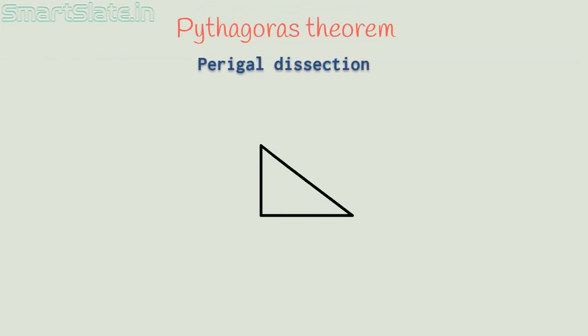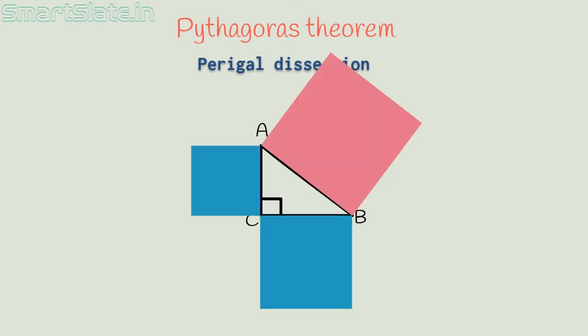Construct a triangle ABC right-angled at C. Draw squares on AB, BC, and CA. Make a copy of the small square and place it in the middle of the large square. Make cuts along the side until it reaches the edges of the outer square.